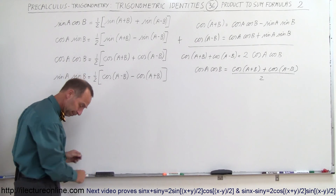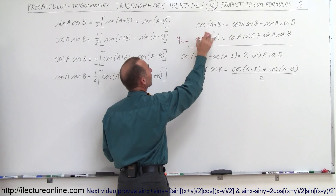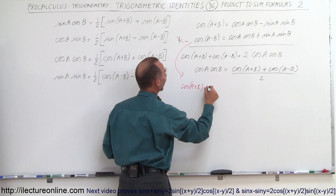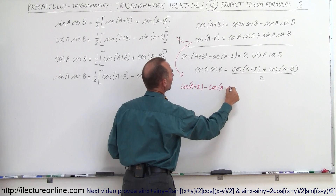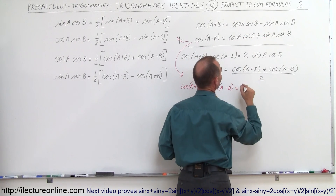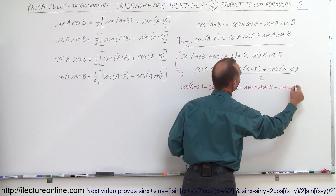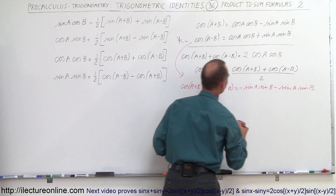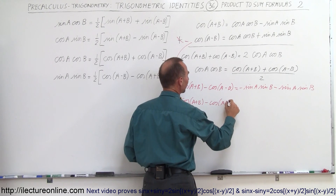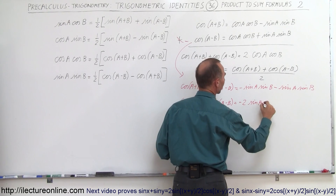Now for the fourth one, using a different color, instead of adding the two equations together we're going to subtract. We end up with cosine of A plus B minus cosine of A minus B. The cosine terms cancel to 0, and this minus this gives us minus sine A times sine B minus sine A times sine B, so cosine of A plus B minus cosine of A minus B equals minus 2 times sine A times sine B.